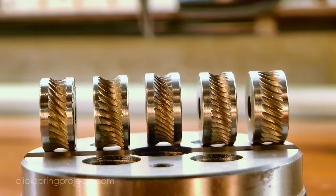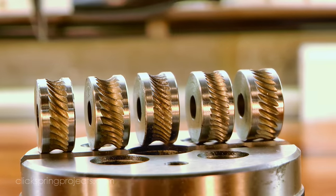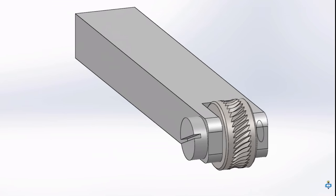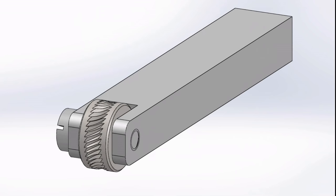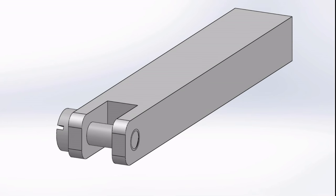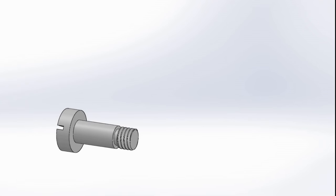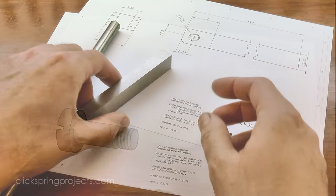I'm in the process of making this set of rope knurls for some future Clickspring projects. And to use them, I need a holder like this. It's a basic bump style knurling tool that can be mounted onto the lathe tool post and then pushed into the work to form the pattern. It's a nice simple design, it's just a steel body section and a threaded axle.